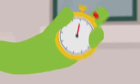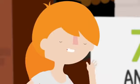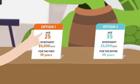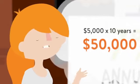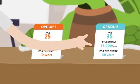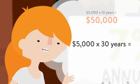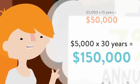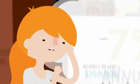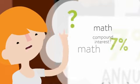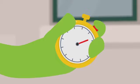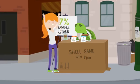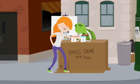You have ten seconds. Over here I'm saving five grand a year for 10 years — that's $50,000 total. Over here I'm saving five grand a year for 30 years — that's $150,000 total. 7% does something, but I'm putting way more money into that one. So... option two. You choose that one.